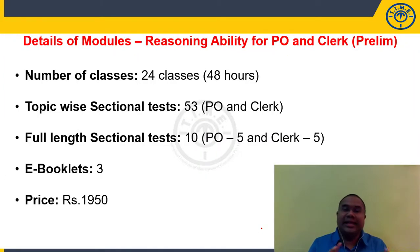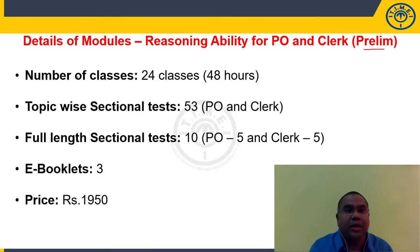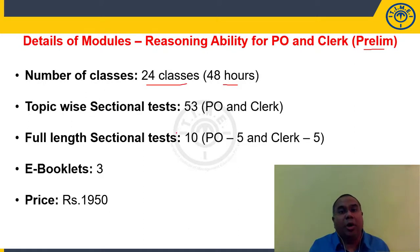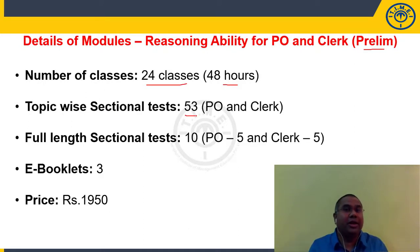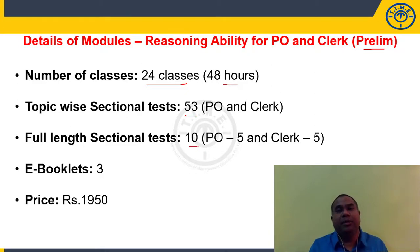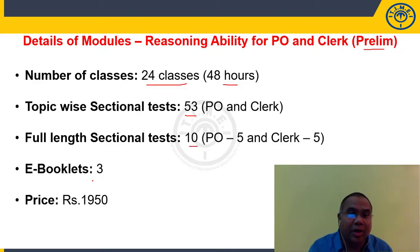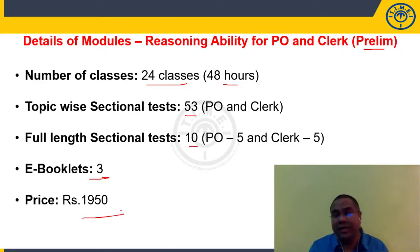For reasoning ability for PO and clerk, we are offering one module for prelim. The total number of classes is 24, that is 48 hours total duration. You get 53 topic-wise sectional tests for PO and clerk together, and 10 full-length sectional tests — 5 on PO pattern and 5 on clerk pattern. You will get three e-booklets and the price of this module is 1950 rupees.